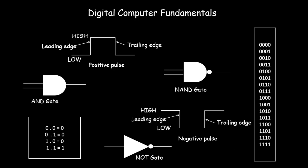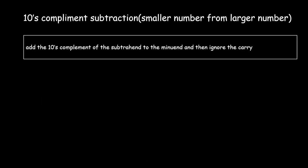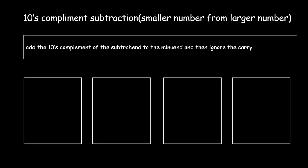Hello everyone, welcome to this tutorial on digital computer fundamentals. In today's lecture, let us discuss tens complement subtraction. First, when you want to subtract a smaller number from a larger number, you find the tens complement of the subtrahend, add it to the minuend, and then ignore the carry.